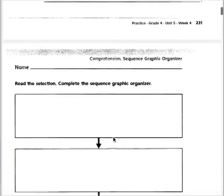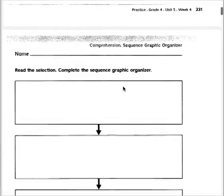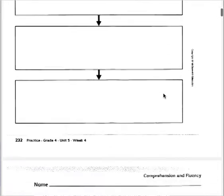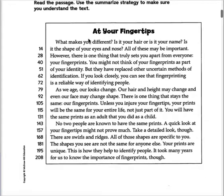Then you have the sequence graphic organizer. You're working on sequence. Remember, sequence tells us the way things happen in a story or in a text — what happens first, next, then, finally. So you have this graphic organizer, and you're going to use it for the story 'At Your Fingertips.'